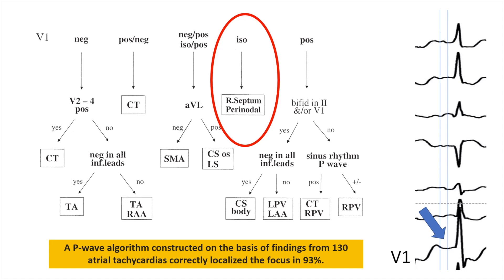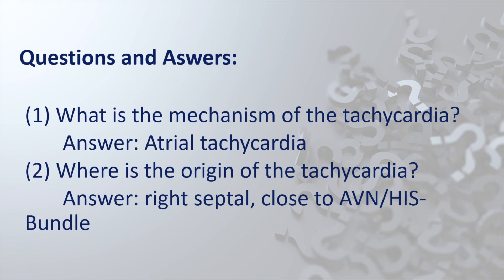the septum. So this is the location of the atrial tachycardia based on this algorithm. The ECG actually belongs to a patient with atrial tachycardia which was successfully ablated very close to the His bundle from the right side of the septum.